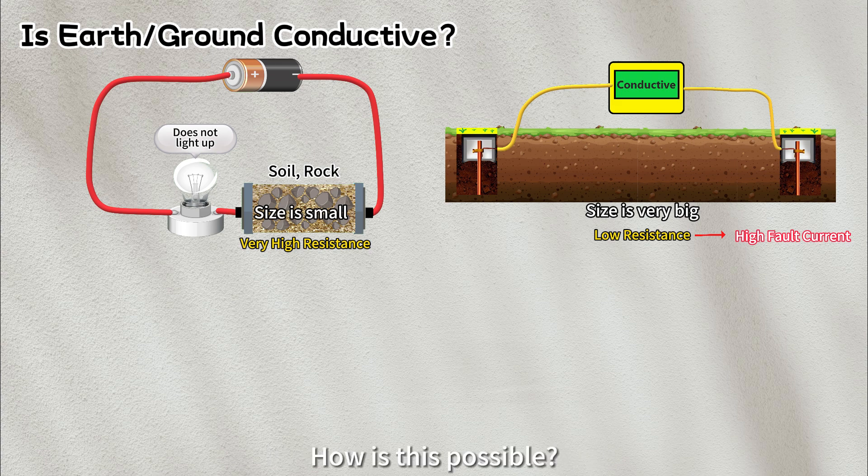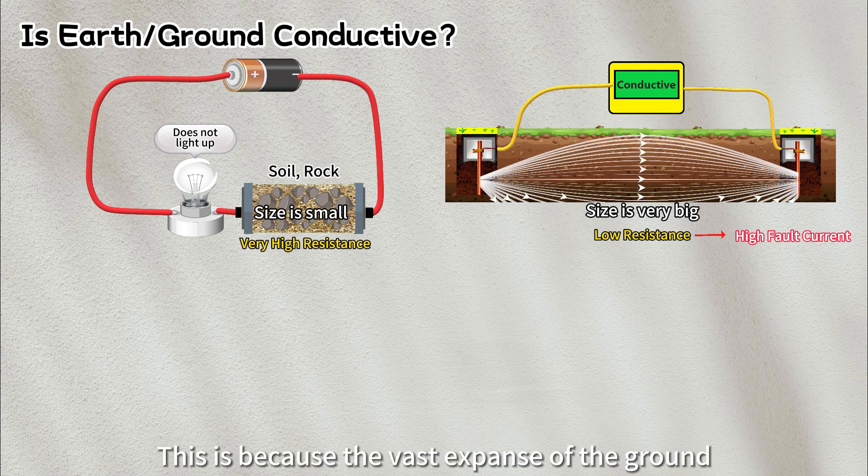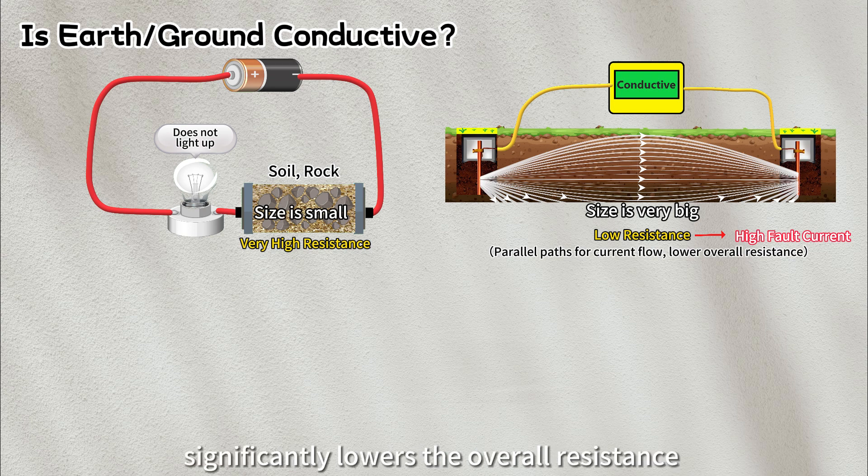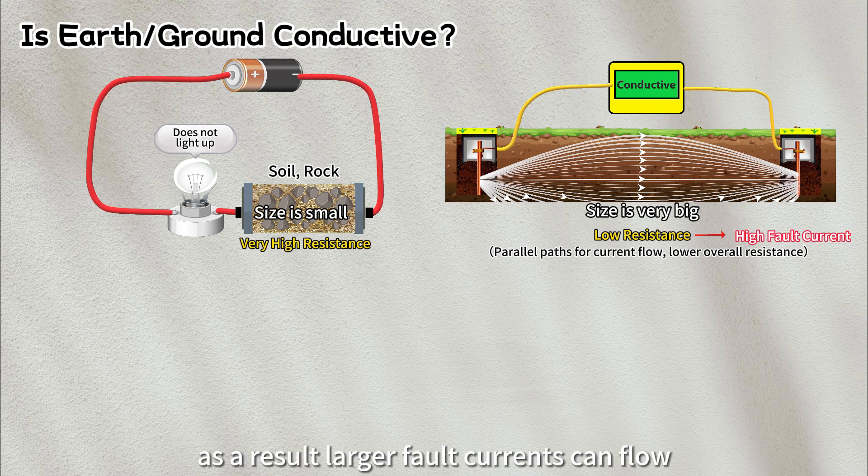How's this possible? This is because the vast expanse of the ground provides almost unlimited sets of parallel paths that the current could take between the two electrodes. This parallel configuration significantly lowers the overall resistance to a smaller value. As a result, larger fault currents can flow.